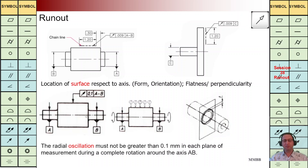At the bottom we are going to have run out, tz is 0.1, axis is A-B, for each cross section individually. As we can see here, the dial gauge is going to refer to each cross section individually. We are going to check the radial oscillation of each cross section individually.